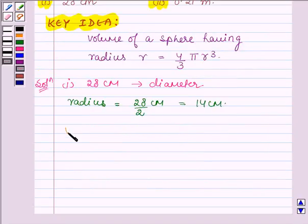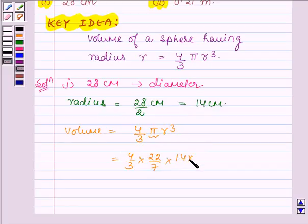Now let us calculate the volume. Volume is given by 4 upon 3 into π into r cube. That is we have 4 upon 3, value of π is 22 upon 7. Here r is the radius and radius is 14 cm. So we have 14 into 14 into 14 and volume is given in units cube.